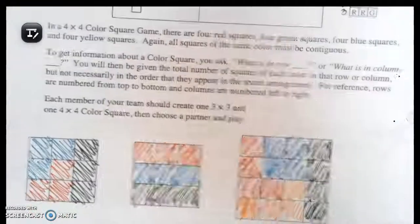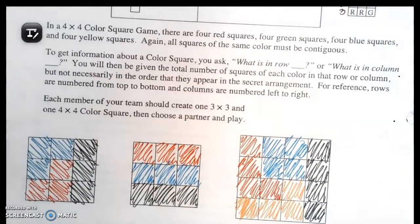In a 4x4 color square game, there are four red squares, four green squares, four blue squares, and four yellow squares. Again, all the squares of the same color must be continuous.